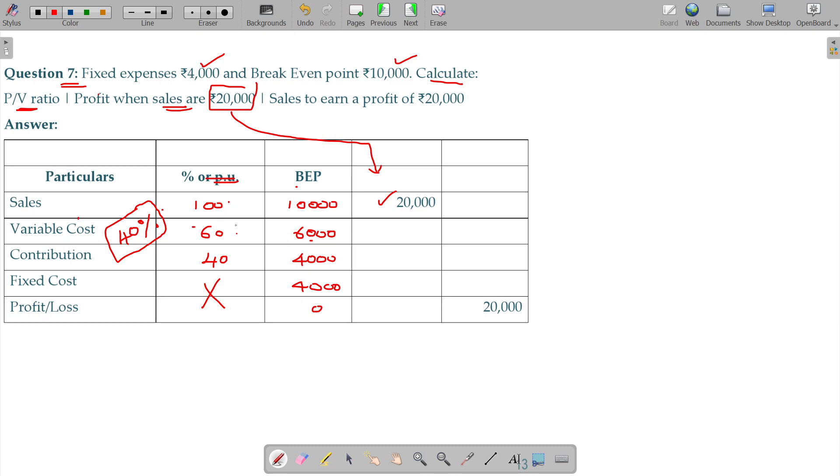Sales, variable cost, variable cost 60 percentage. And the constant area value, 12,000 rupees. And your contribution should be 8,000 rupees. Fixed cost will not change at all. 4000 rupees.